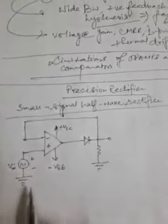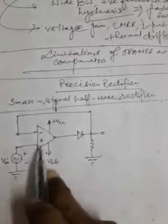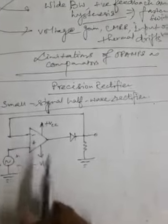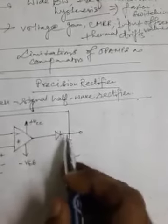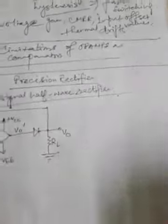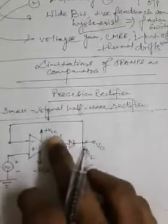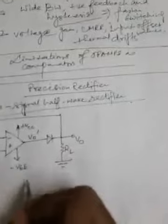The input signal source is applied at the non-inverting terminal, and the inverting terminal is connected with the output through the feedback path. The voltage at the output of the op-amp is denoted by Vo prime, and the final output Vo is taken across the load resistance RL. This is a simple positive small signal half wave rectifier circuit.